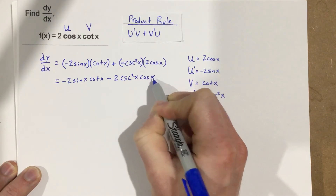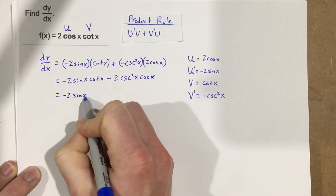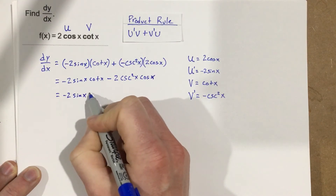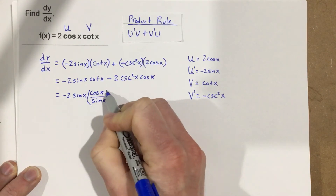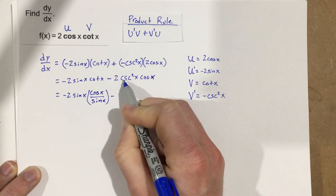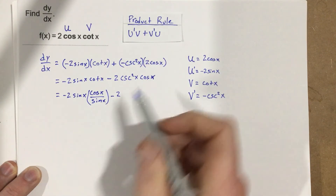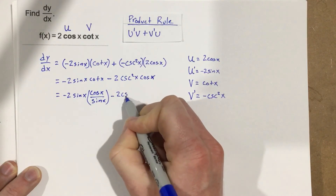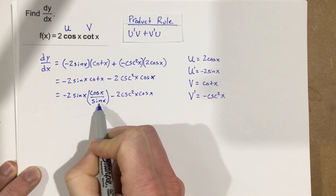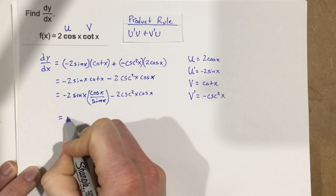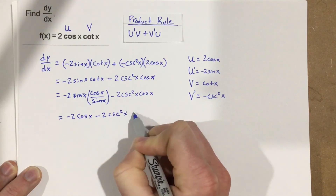Now it looks like I can do some simplifying here. From our trig identities, I know that cotangent x is cosine x over sine x. So this becomes negative 2 sine x times cosine x over sine x, minus 2 cosecant squared x cosine x. The sine x cancels, and I'm left with negative 2 cosine x minus 2 cosecant squared x cosine x.